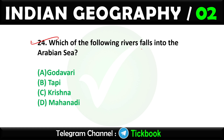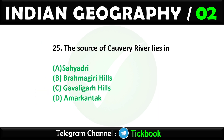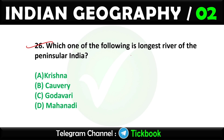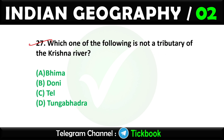Question twenty-four: Which of the following rivers falls into the Arabian Sea? Option number B is the right answer: Tapti. Question twenty-five: The source of Kaveri river lies in. Option B: Brahmagiri Hills is the right answer. Question twenty-six: Which one of the following is the longest river of peninsular India? Option C is the right answer: Godavari.